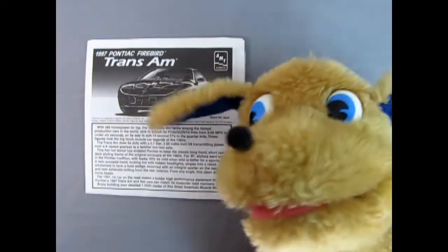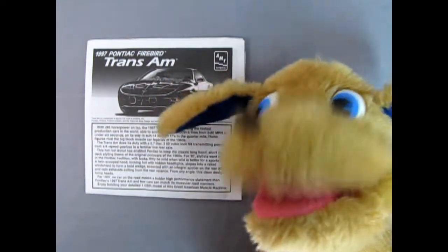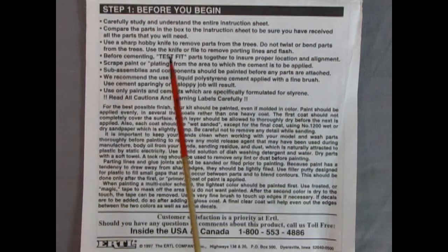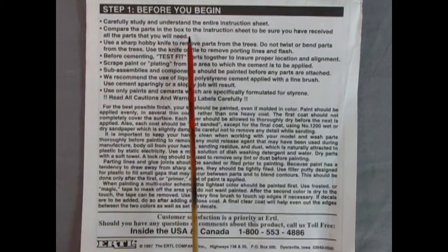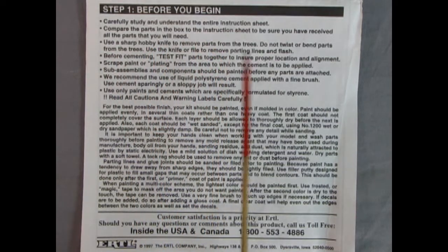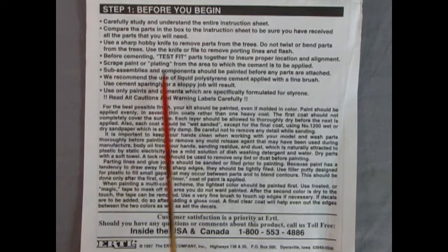Let's open this thing up and take a look at each of the building steps. Step one is the before you begin section and this is where you learn about how to put your model together. It's got some great tips like carefully study and understand the entire instruction sheet, test fitting parts, as well as advanced techniques like using primer and sand papers to get a perfectly smooth paint finish.